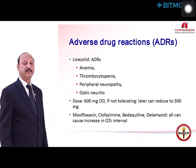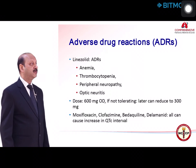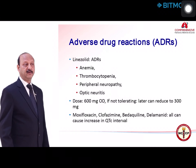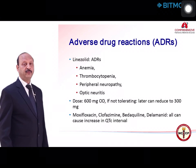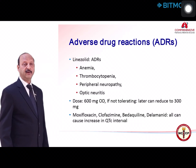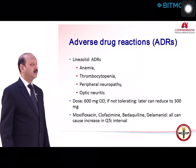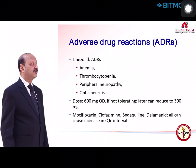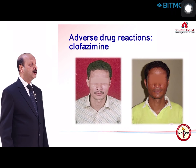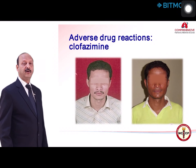Linezolid is now used as part of Category 5 regimen in XDR-TB cases and sometimes as a replacement drug. Side effects include anemia, thrombocytopenia, peripheral neuropathy, and optic neuritis — these must be monitored with repeated hemograms, as anemia can develop within days and can be fatal if missed. The dosage is 600 mg once a day; if not tolerated, it can be reduced to 300 mg after a few months. When using moxifloxacin, clofazimine, bedaquiline, or delamanid, all of which can cause QTc prolongation, one should be very careful.